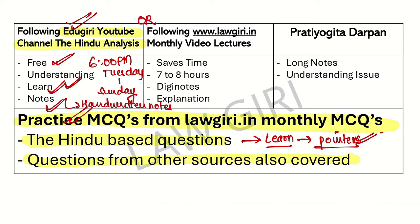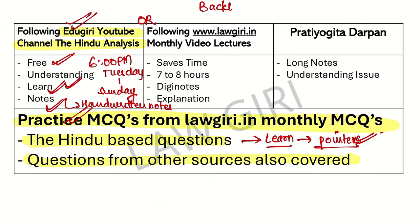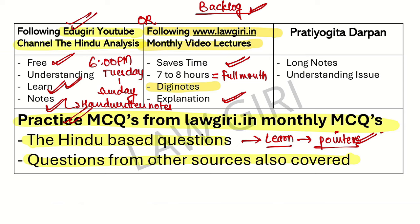If you don't have a daily class, you may have a backlog — and that can be very problematic. So what can you do? You can see monthly video lectures on www.loggiri.in, where you will get video lectures and digital notes. In 7 to 8 hours, your full month will be prepared, with explanations and notes in pointer format.